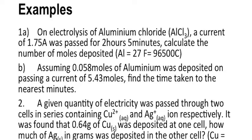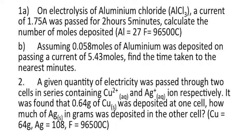Here are two practice questions. Question 1: On electrolysis of aluminium chloride, a current of 1.75 amperes was passed through for two hours five minutes. (a) Calculate the number of moles deposited, where aluminium has atomic mass of 27 and the Faraday constant is 96,500 coulombs. (b) Assuming 0.058 moles of aluminium was deposited on passing a current of 5.43 amperes, find the time taken to the nearest minute. Question 2: A quantity of electricity was passed through two cells in series containing Cu²⁺ and Ag⁺ ions. 0.64 g of copper was deposited. How much silver in grams was deposited? Cu = 64.54 g/mol, Ag = 108 g/mol, Faraday constant = 96,500 coulombs.